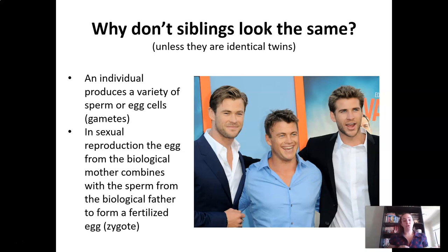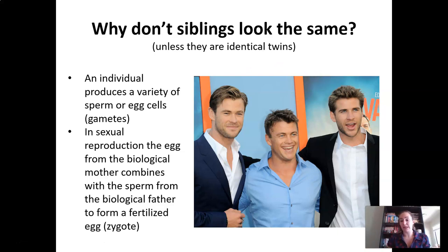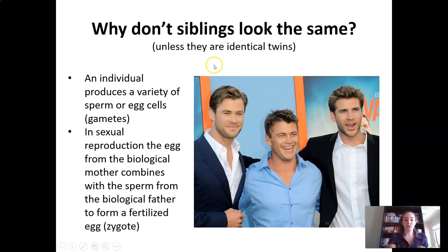So we're going to think about how this happens. What is it about meiosis that allows us to produce a variety of offspring and a variety of gametes? First, each individual produces a variety of sperm or egg cells. Although these three men have the same biological mother and biological father, their mother made several different egg cells, and their father made several different sperm cells, and each of those were genetically unique. During sexual reproduction, the egg from the biological mother combines with the sperm from the biological father to form a fertilized egg. The egg that was used to produce one brother is different from the egg used to produce another, so when they combine, you have a unique set of DNA used to form each individual.